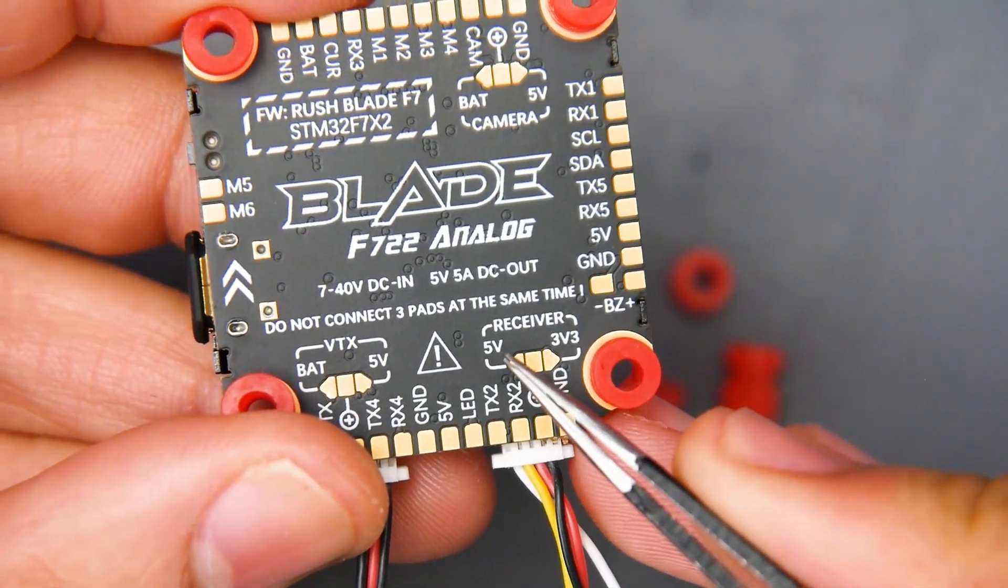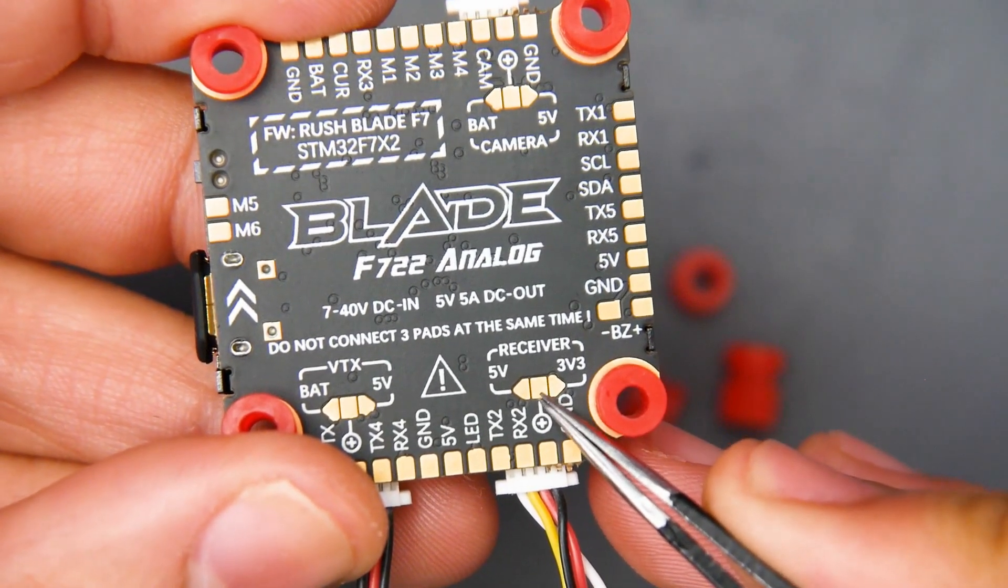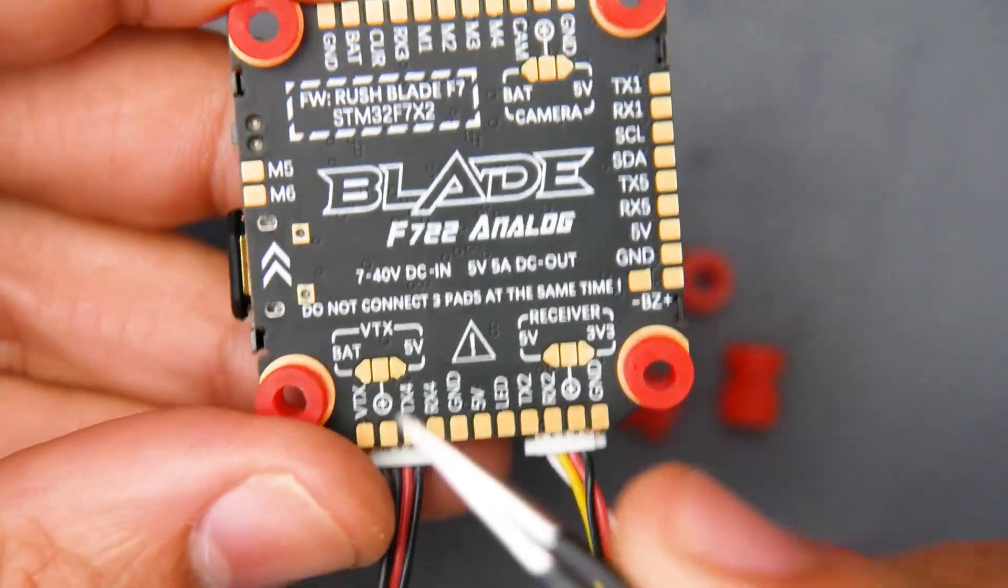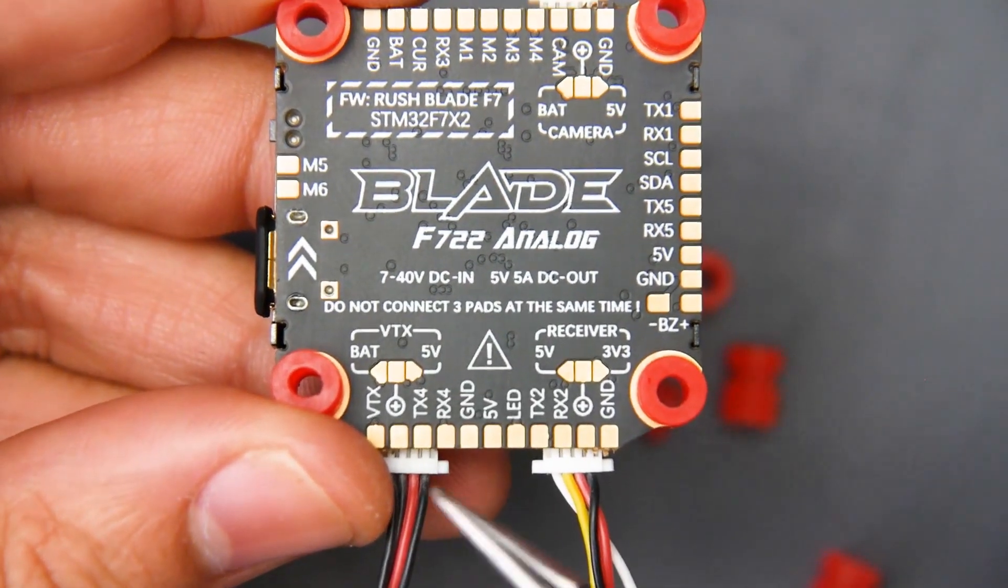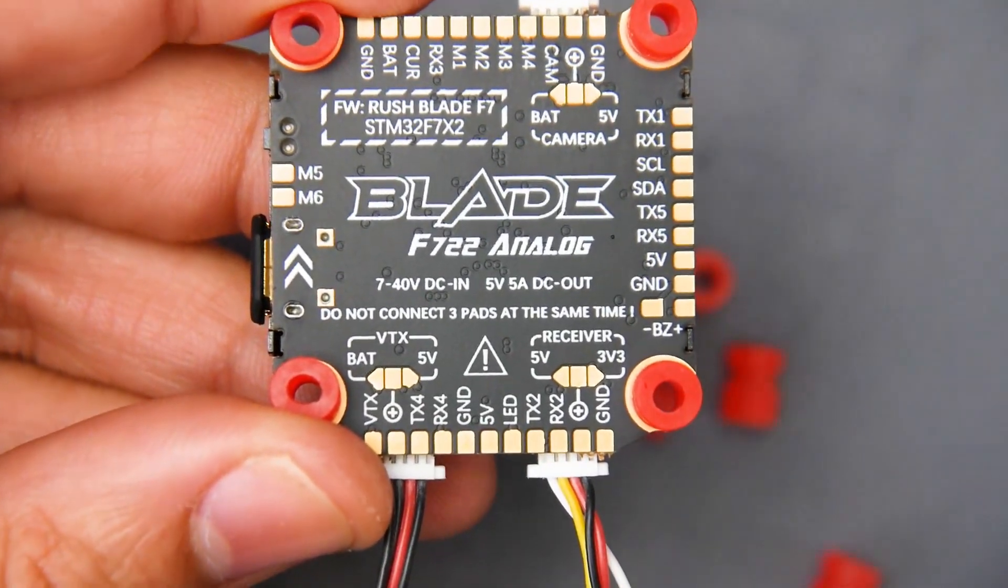Receiver, you can go 3.3 volt route or the five volt route. More likely, you're going to go the five volt route, which would be this one and this one. Just two of these. Make sure you bridge only two. For video transmitter, we have battery voltage and five volt. No nine volt, no eight volt, no 10 volt,